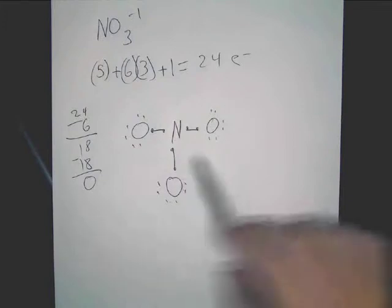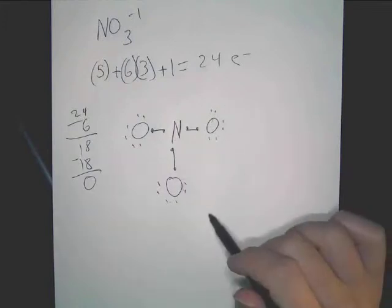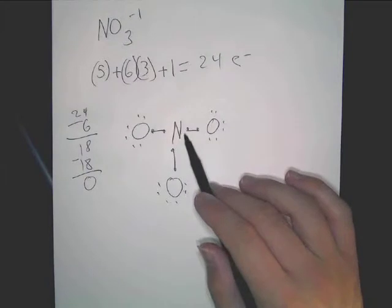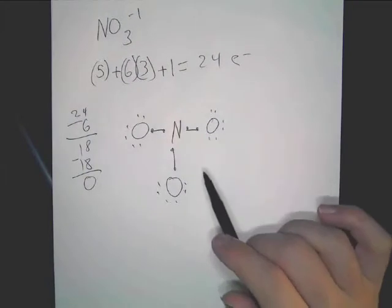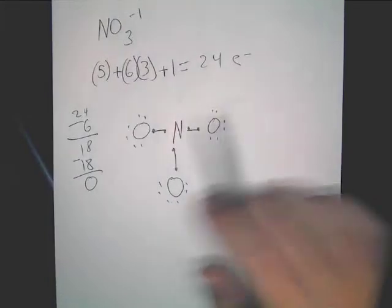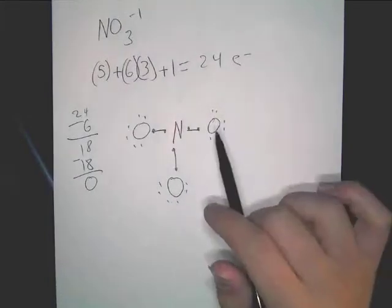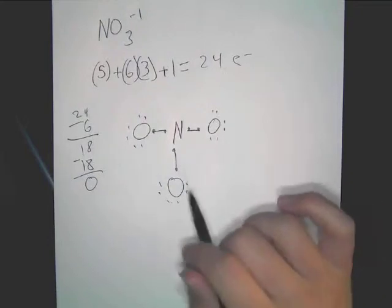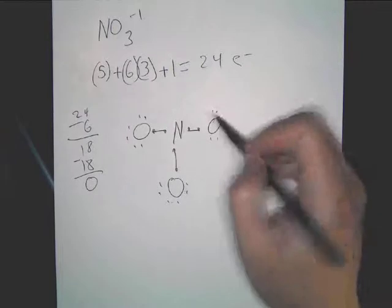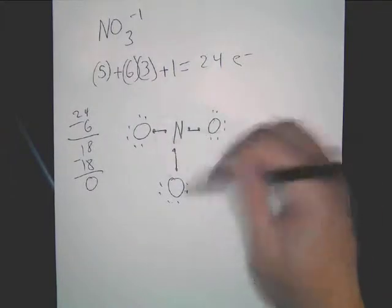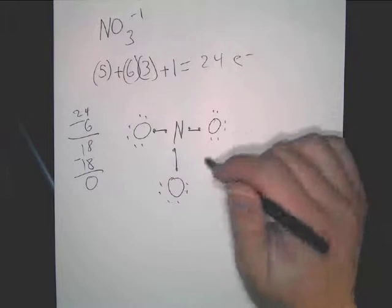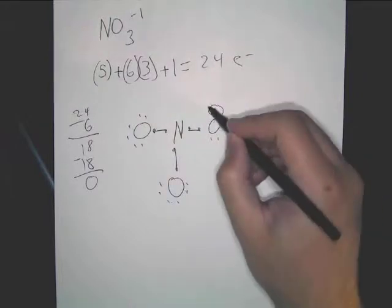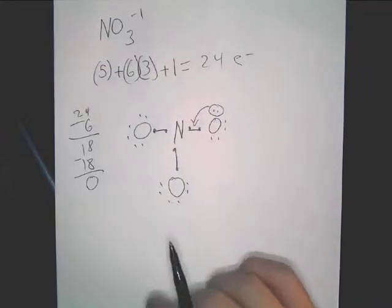However, the structure here is not finished because nitrogen only has 6 electrons. Do you see why? Because it's got 3 bonds. That's it. It only has 6. It needs to have 8. The structure is not complete until it has 8. So, here's what you can do. You can take an electron from any of the oxygens. It does not matter. We'll just pick this one. And what it does, it's going to go right there and it's going to form a double bond.